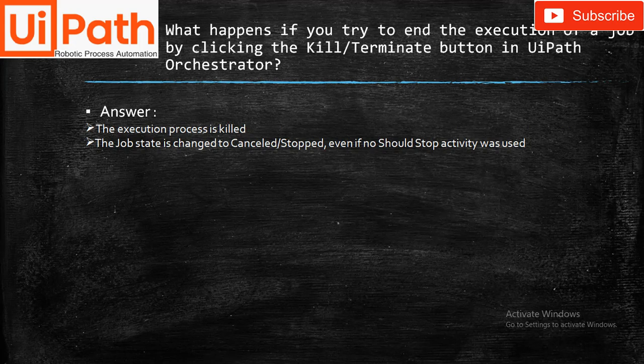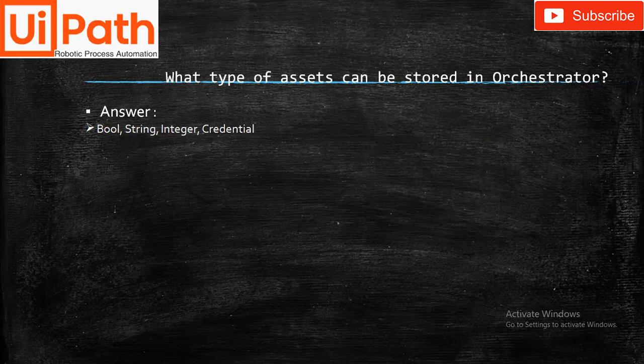What happens if you try to end the execution of a job by clicking the Kill or Terminate buttons in UiPath Orchestrator? Answer: The execution process is killed, and the job state is changed to Cancelled or Stopped, even if no Stop activities were used.